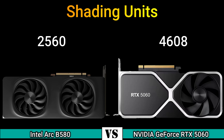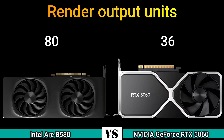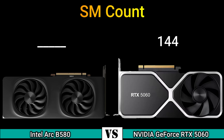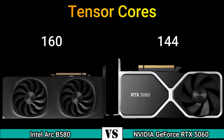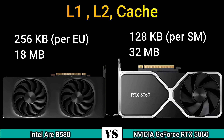Texture mapping units: 160 and 144. Render output units: 80 and 36. SM count: 144. Tensor cores: 160/20 and 36/1. L2 cache: 256 KB per partition, 18 MB total and 128 KB per partition.